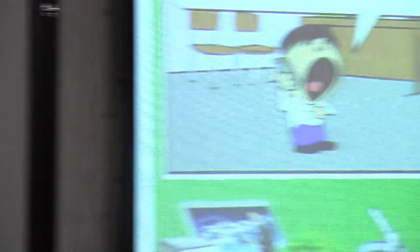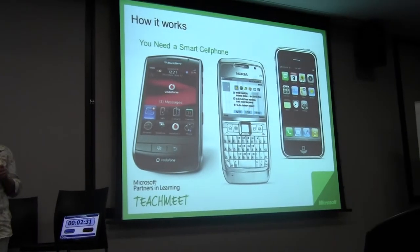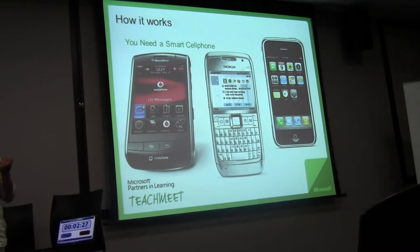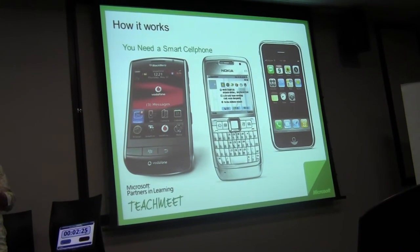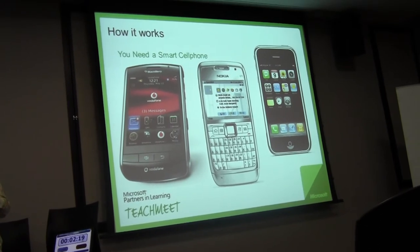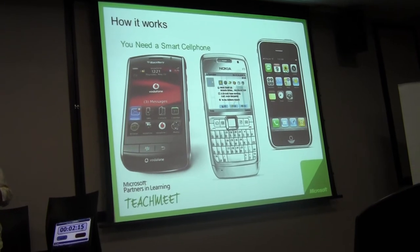This year, we decided to use the cell phones in their pockets. Each version of a phone has some way of taking voice notes. On a BlackBerry, it's called a voice note. On an iPhone, it is called a voice memo. It allows you to record your voice. It's quite clever because you can hold it next to your face and it gets rid of all the other noise in the classroom.